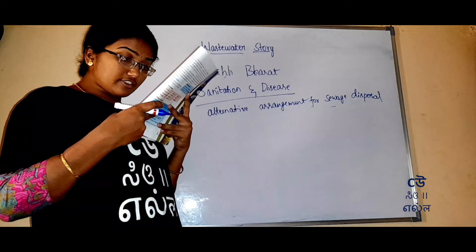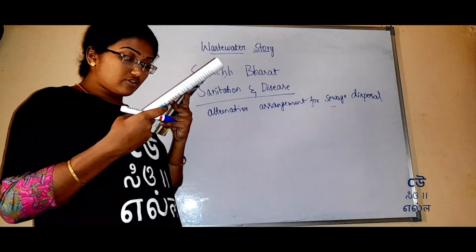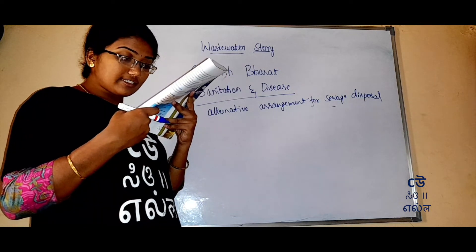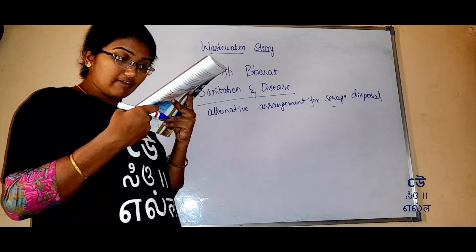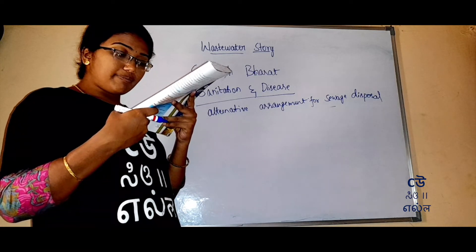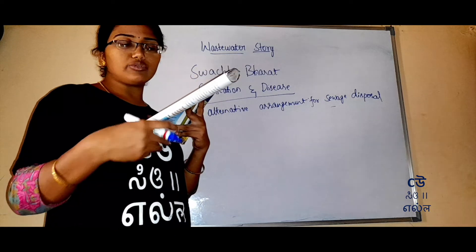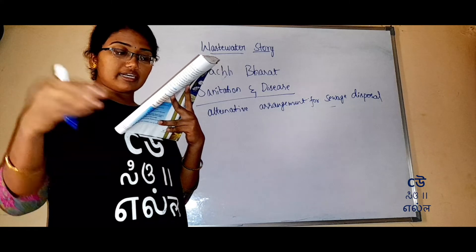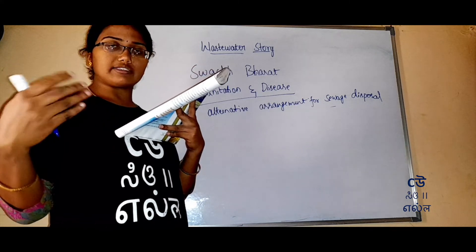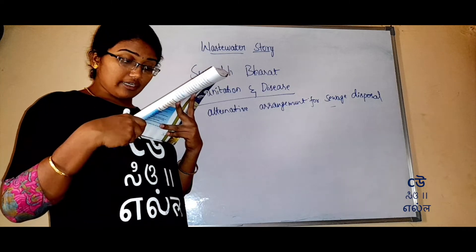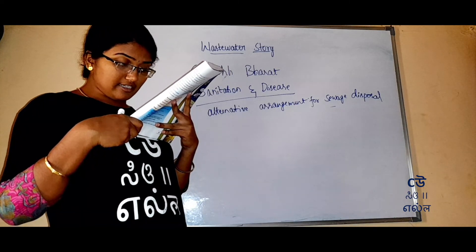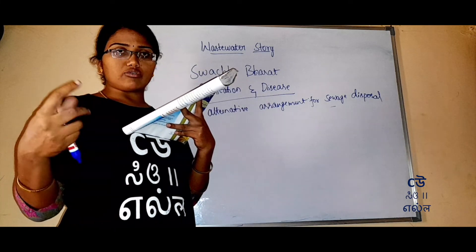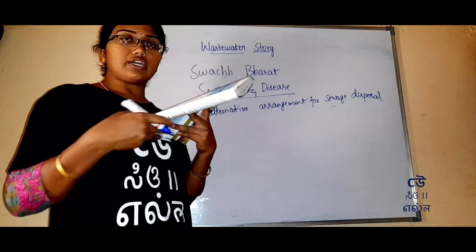These toilets do not require scavenging. Excreta from the toilet seats flow through covered drains into a biogas plant. The biogas produced is used as a source of energy.